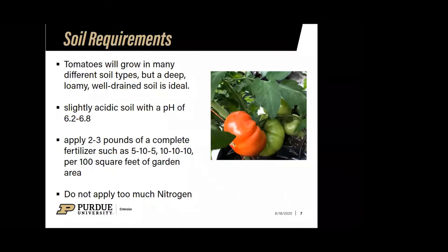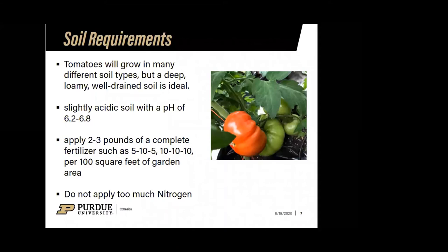Tomatoes grow in numerous places across the U.S., but the ideal soil condition for a tomato would be deep, loamy, well-drained soil. Tomato plants don't like sitting in water — wet feet cause a lot of the disease issues we see with tomatoes. The soil should be slightly acidic, with a pH of 6.2 to 6.8.